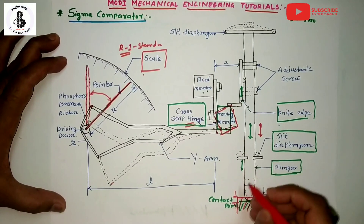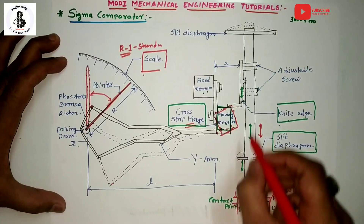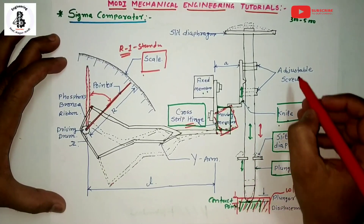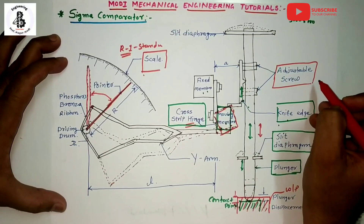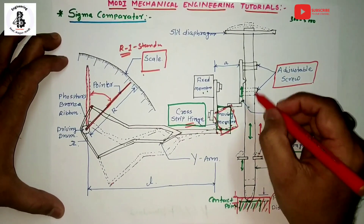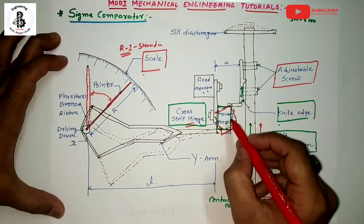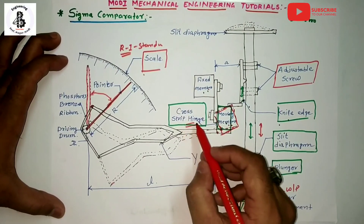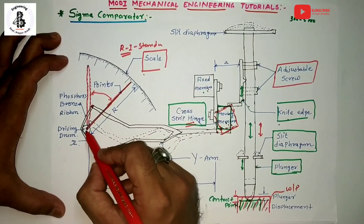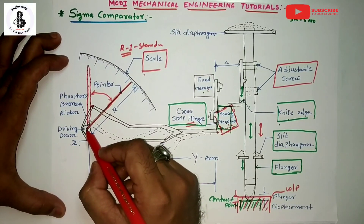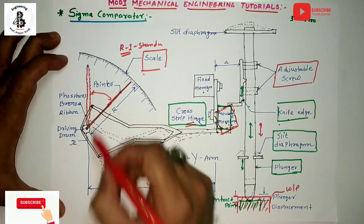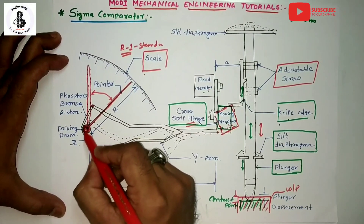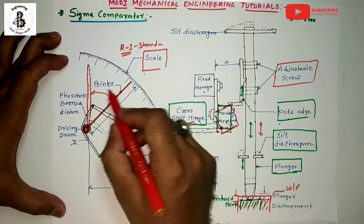By changing the plunger displacement, the slit diaphragm controls the up and down motion. An adjustable screw is used for adjusting magnification according to the workpiece. The reciprocating motion connects to the moving block, which connects to the fixed member via the cross strip hinge, then to the Y-arm. At the end of the Y-arm, the driving drum — connected by phosphorous bronze ribbons to both ends of the Y-arm — rotates and deflects the pointer on the scale.